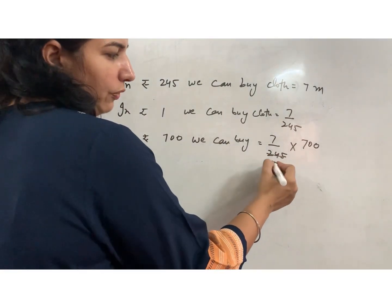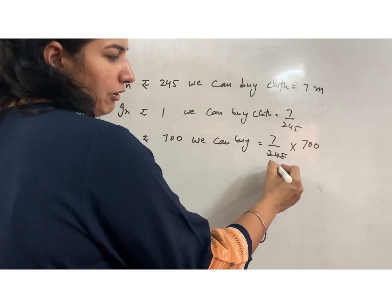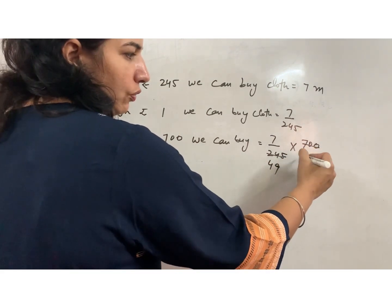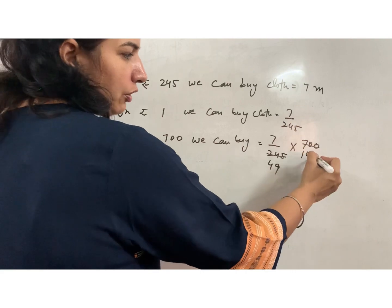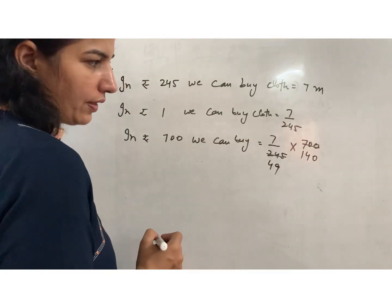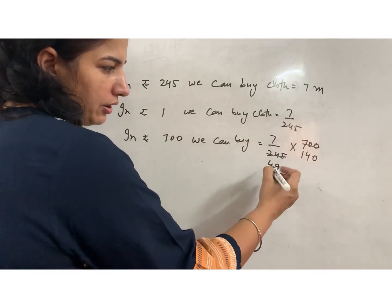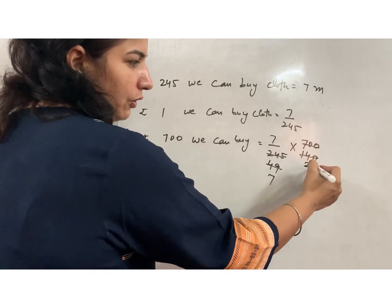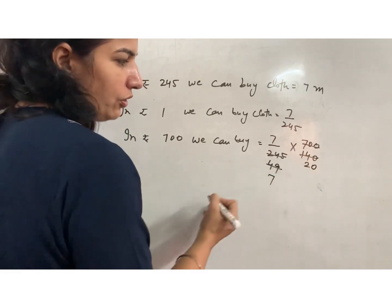5 fours are 20, 5 nines are 45, 5 fours are 20 and 0. And here it is going on table 7, 7s are 49, 7 will cut 40 and 0.